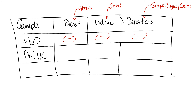What about milk? Protein is found in milk, so the Biuret test would be positive. There is no starch in milk, so the iodine test would be negative. The Benedict's test would be positive because milk contains simple sugars in the form of lactose.